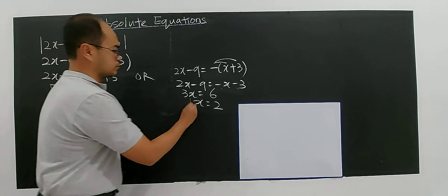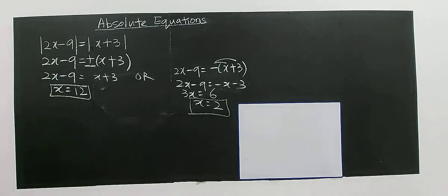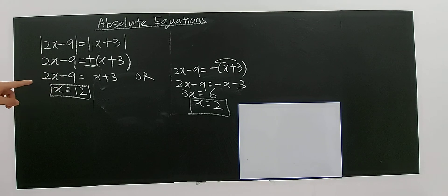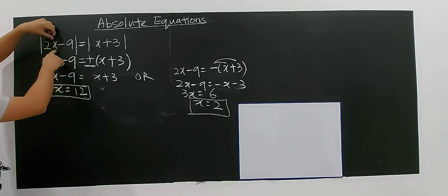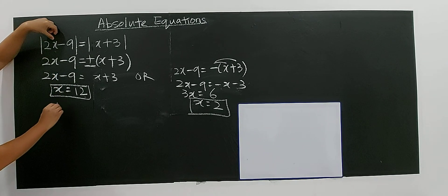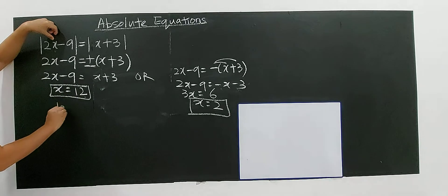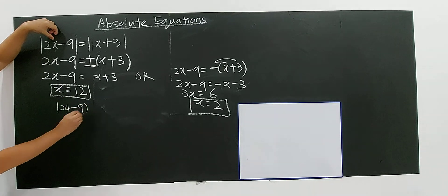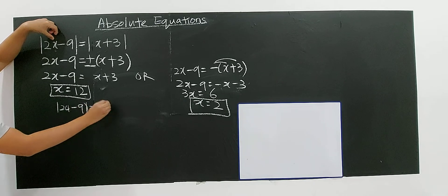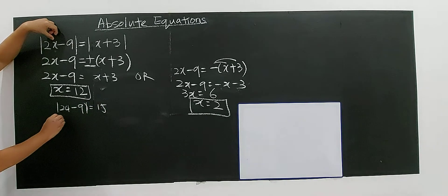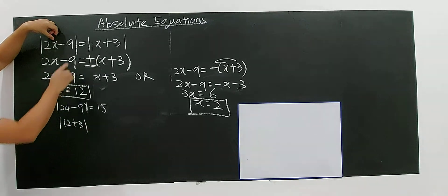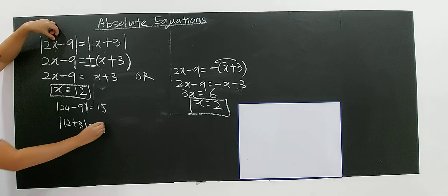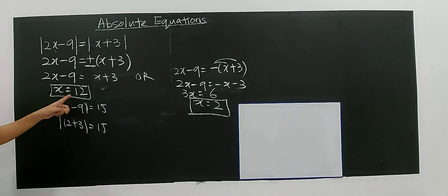So we have 2 solutions. We can do mental checking. For x equals 12: the left hand side is 2 times 12, which is 24, and 24 minus 9 gives you 15. For the right hand side, modulus of 12 plus 3 also gives you 15. So this solution satisfies both sides.